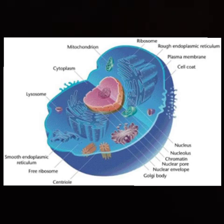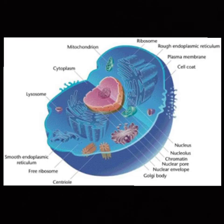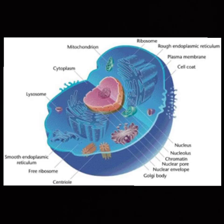What are you going to say about Prokaryotic and Eukaryotic cells? Prokaryotic cells are small, very simple, and most primitive. On the other hand, Eukaryotic cells are very much larger than Prokaryotic cells; they are more complex and more advanced.